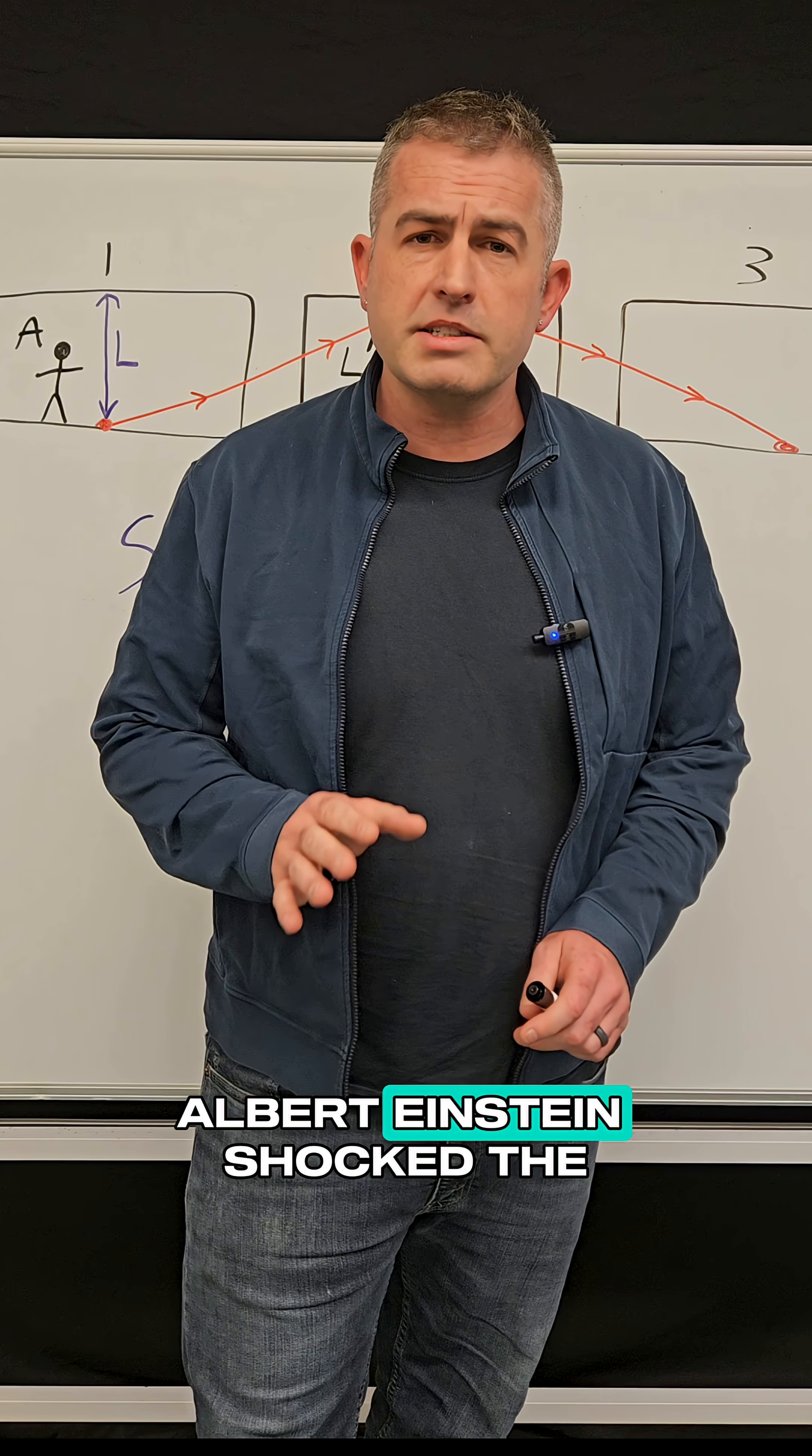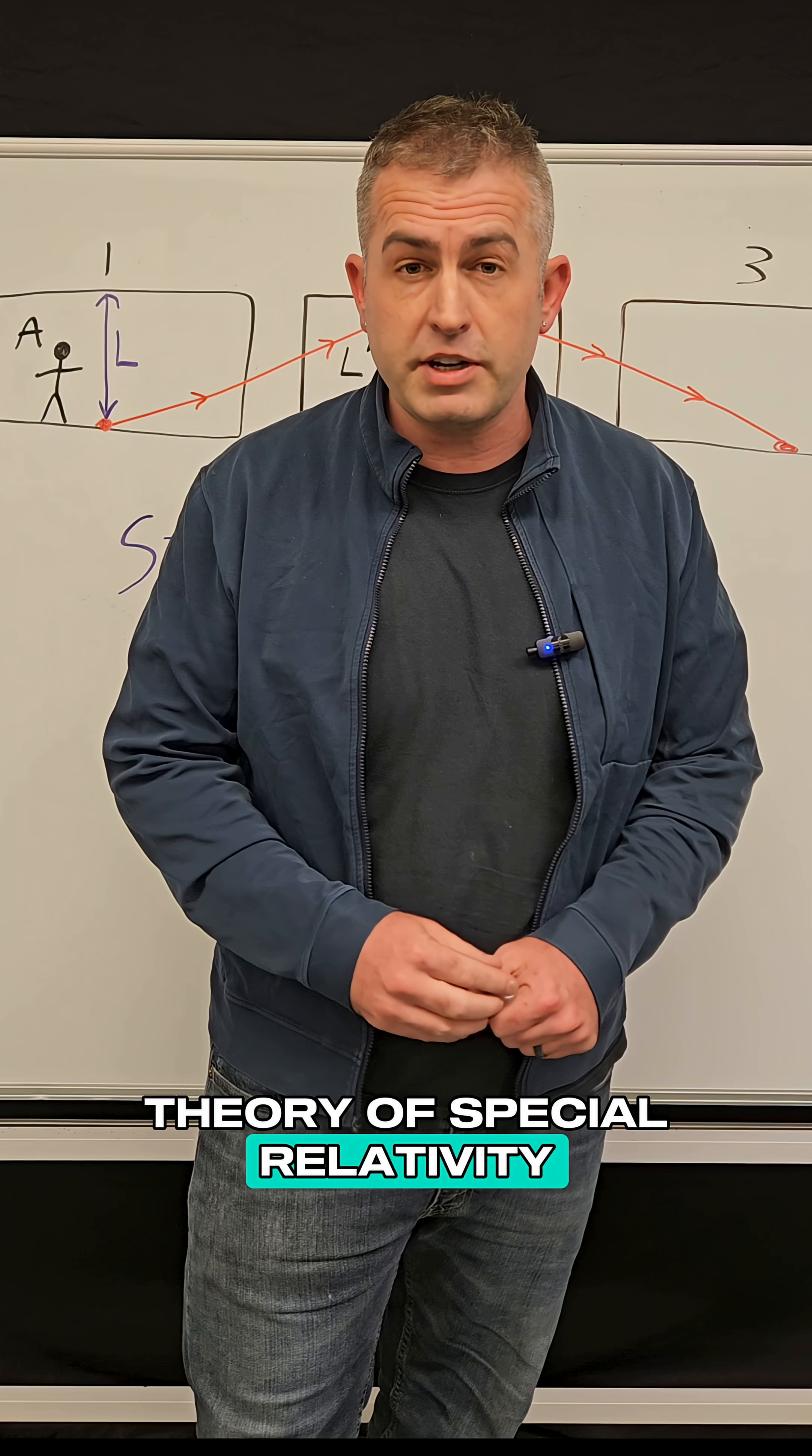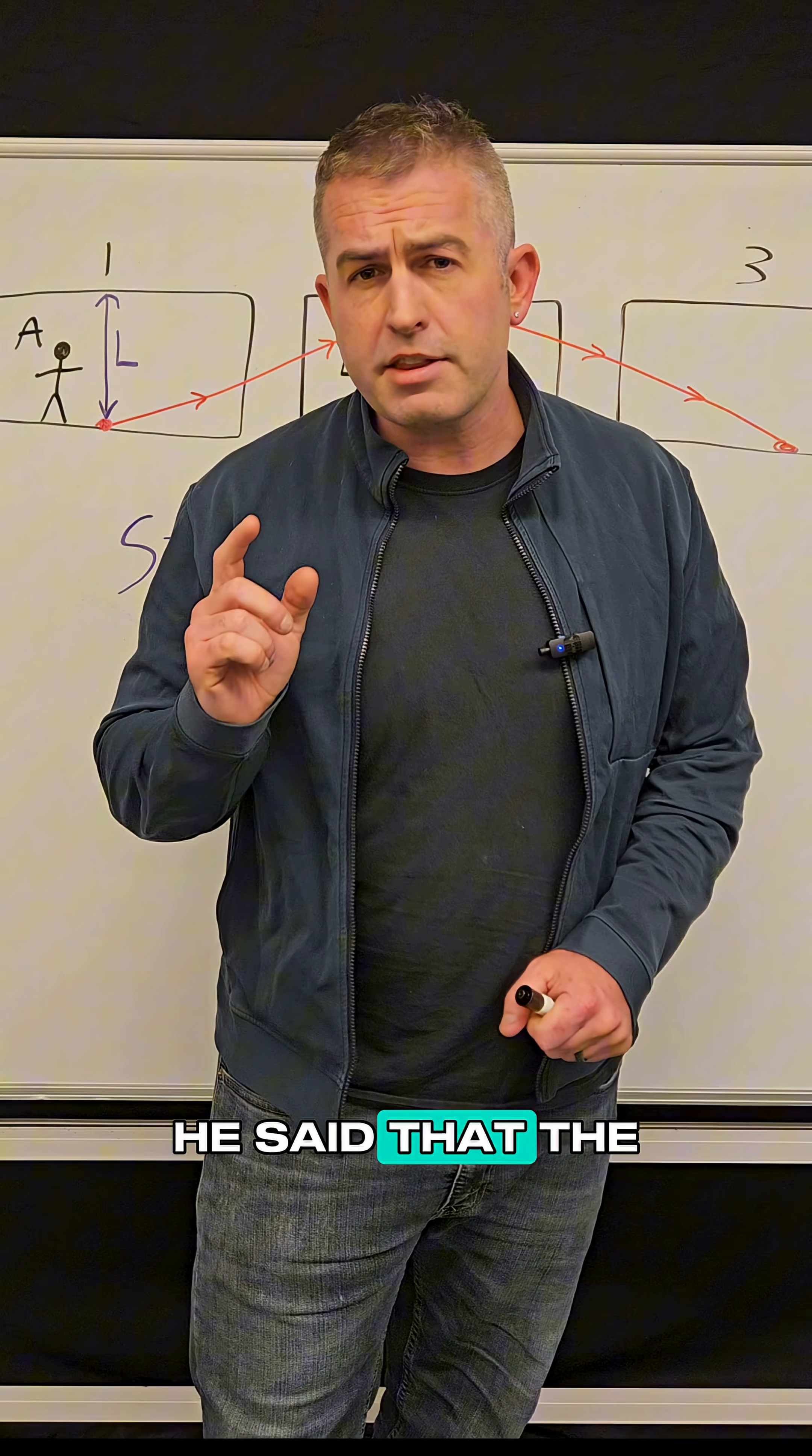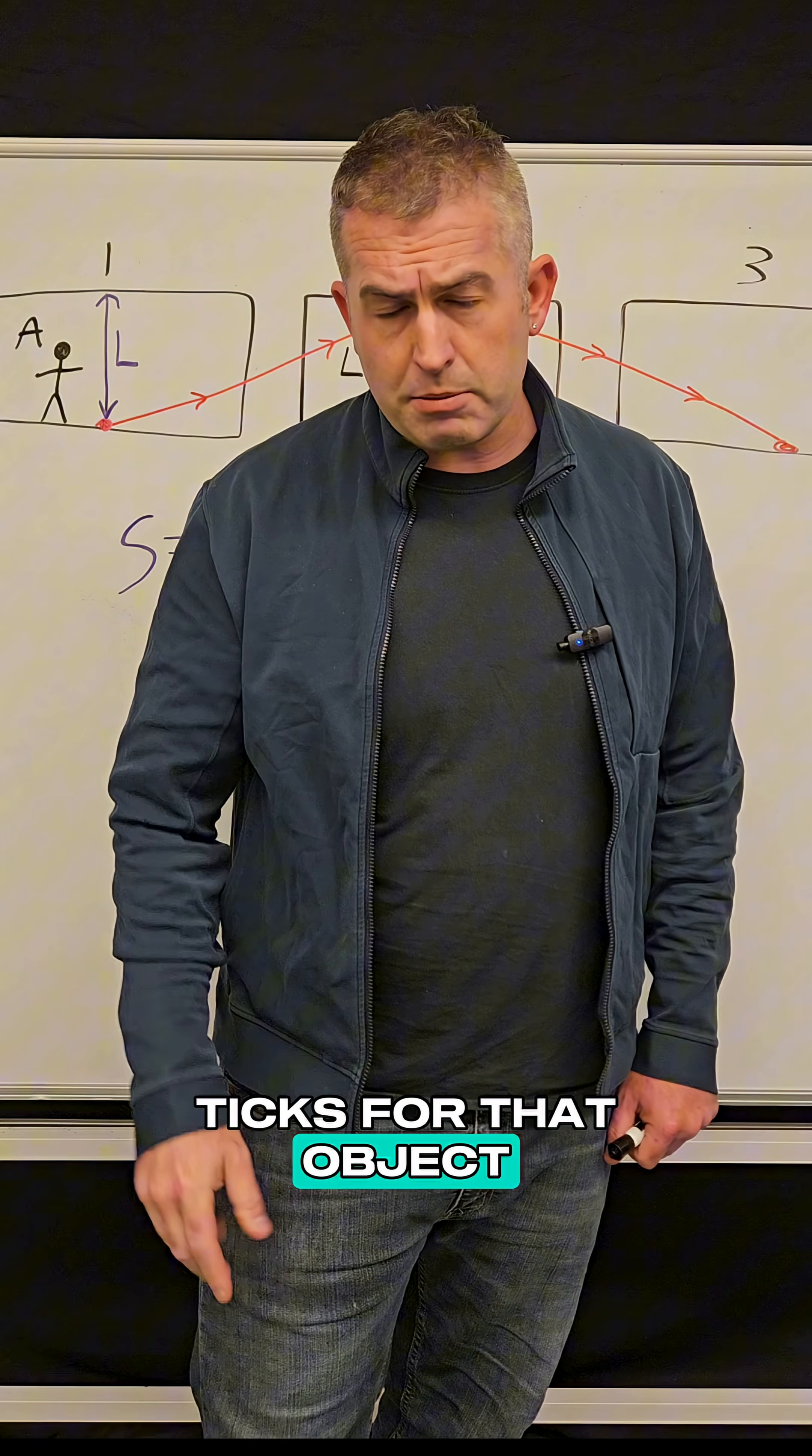In the early 20th century, Albert Einstein shocked the entire world when he published his theory of special relativity. In this theory, he said that the faster an object moves, the slower time actually ticks for that object.